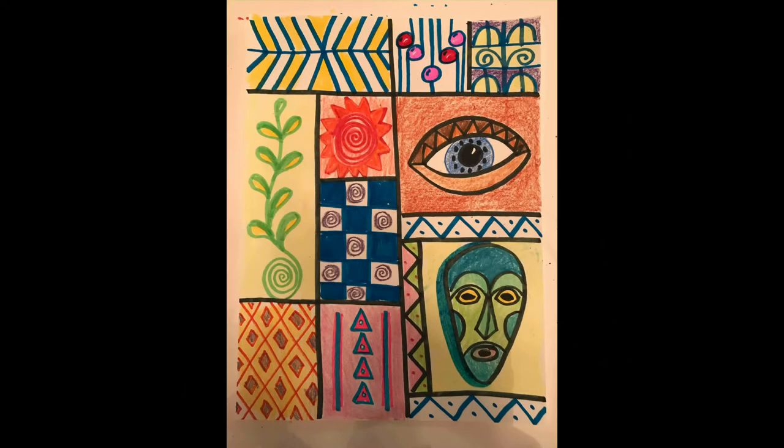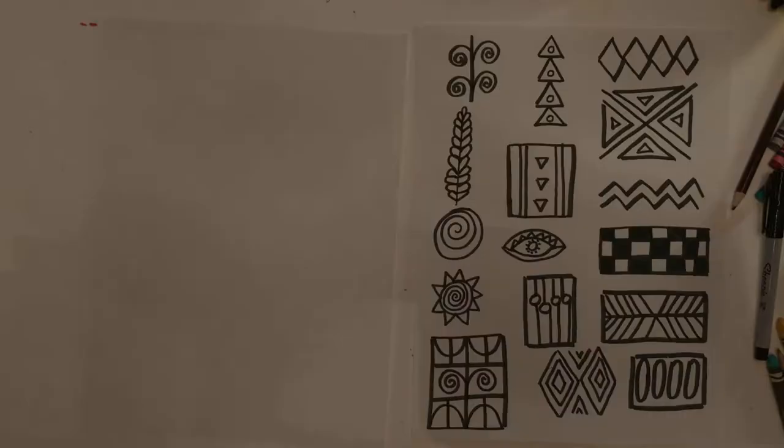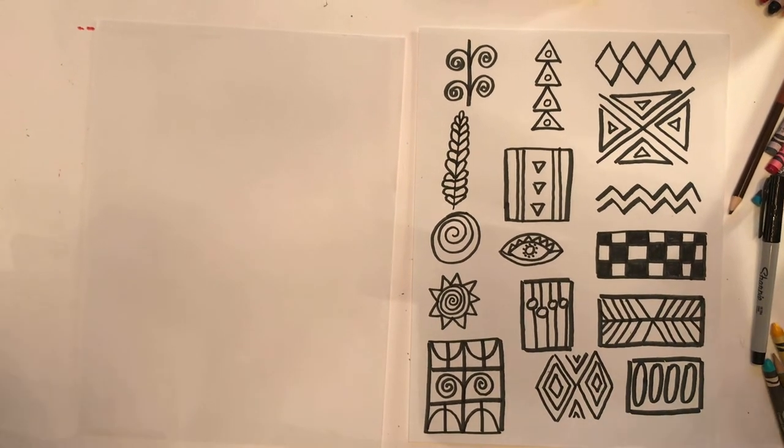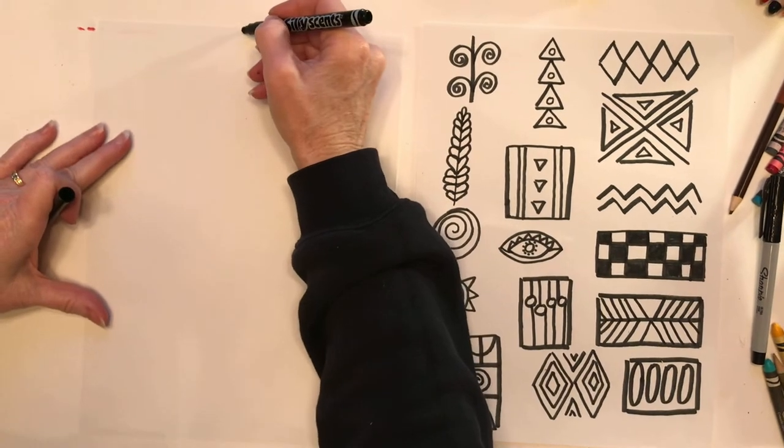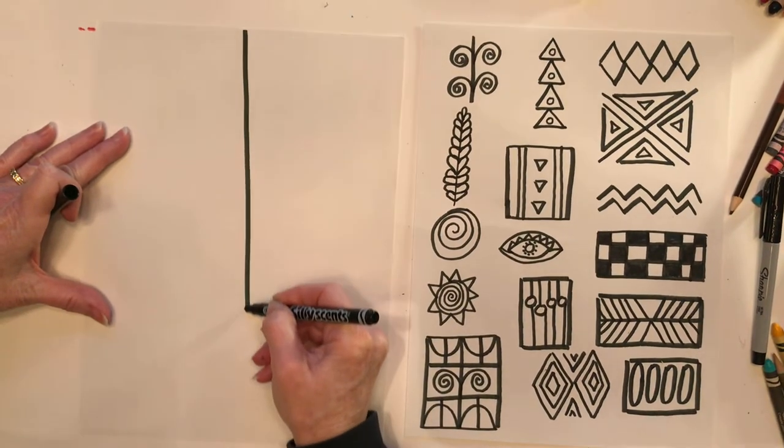Let's use some of that in our own work of art. You can use designs and patterns in your art, or you can draw pictures that have meaning to you in some of the areas of your art. You can use some of these designs, or you can use your own. But first, we're going to section off our paper. We can start with a vertical line going down.